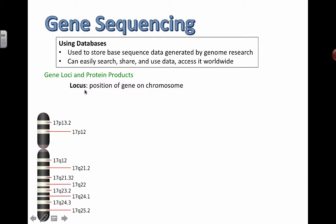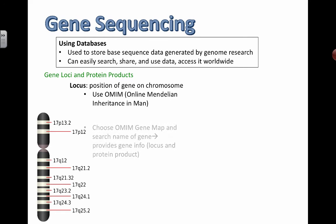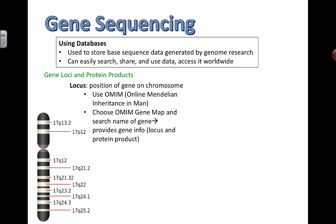The locus means the actual location of a particular gene — that's not too hard to remember. Locus is a single location. If I talk about gene loci, then I'm talking about multiple different locations of where genes are. The rest of this is kind of a list of different databases that you can actually use, access, and what you might be able to find from them.